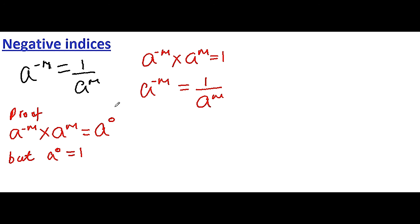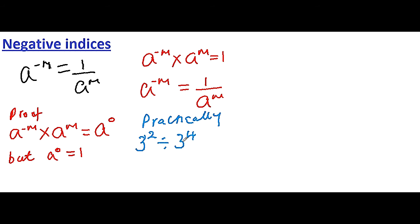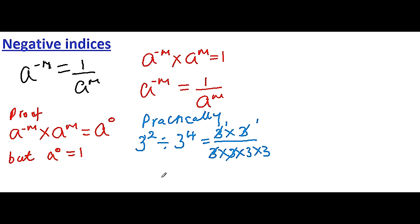We can also verify this practically. Let's take 3 to the power 2 divided by 3 to the power 4. We can expand this as 3 multiplied by 3, divided by 3 multiplied by 3 multiplied by 3 multiplied by 3. Cancelling 3 by 3 gives 1, and again 3 by 3 gives 1. So we conclude this equals 1 divided by 3 squared.